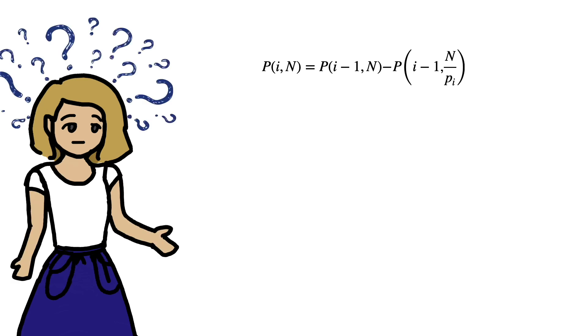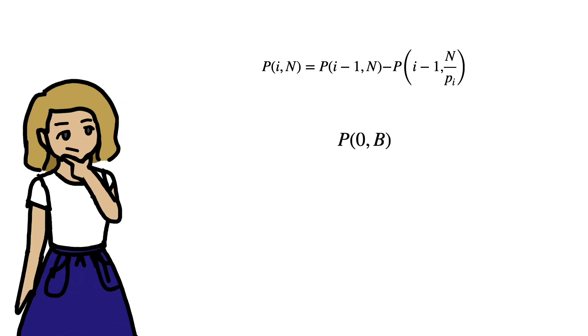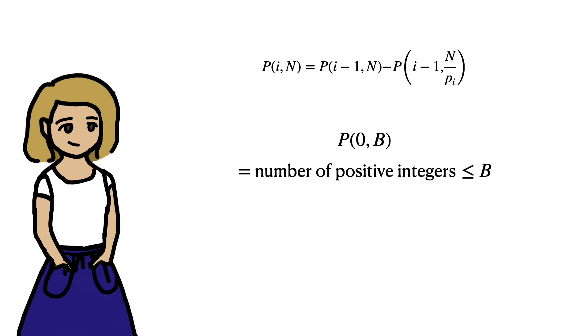Well, after 0 iterations of the sieve, all the squares are blue. So, we need just the number of positive integers less than or equal to b. And this is given by flooring b.